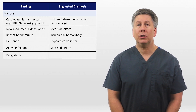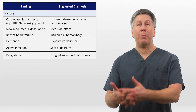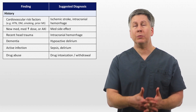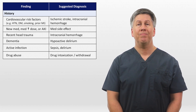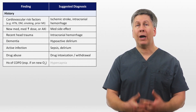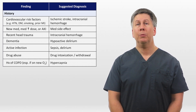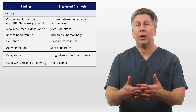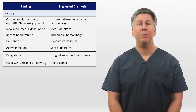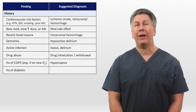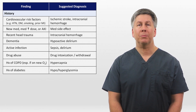A history of drug abuse suggests either intoxication with an opiate or benzo, or withdrawal from a stimulant. If she has a history of COPD, she's at risk of hypercapnia, particularly if she's on a new oxygen therapy. And in a patient with diabetes, you need to worry about derangements of glucose.